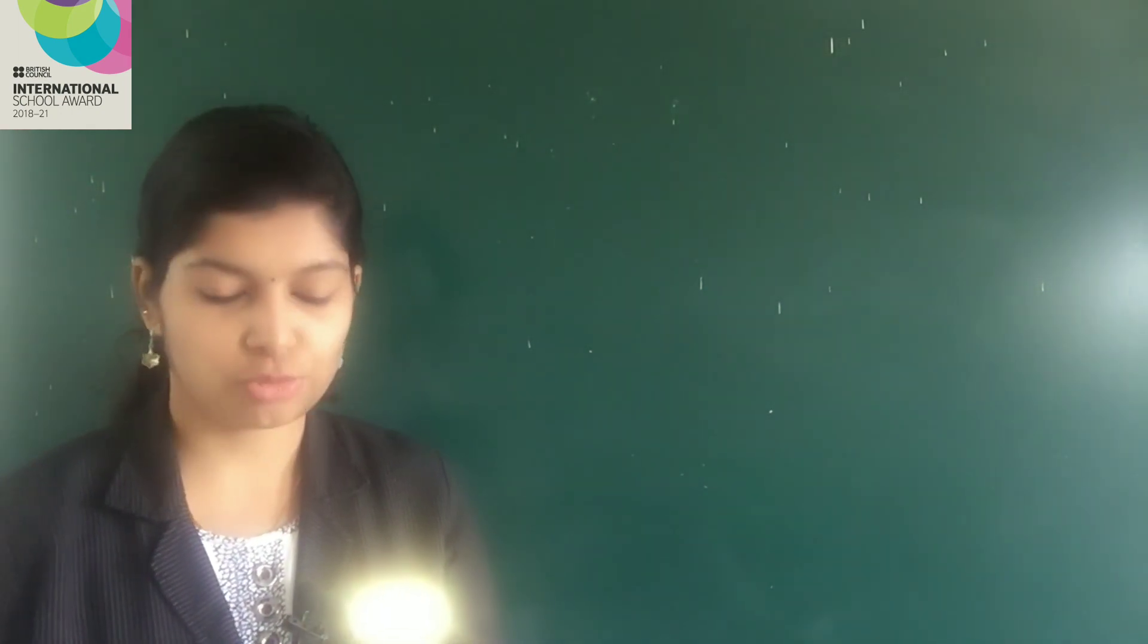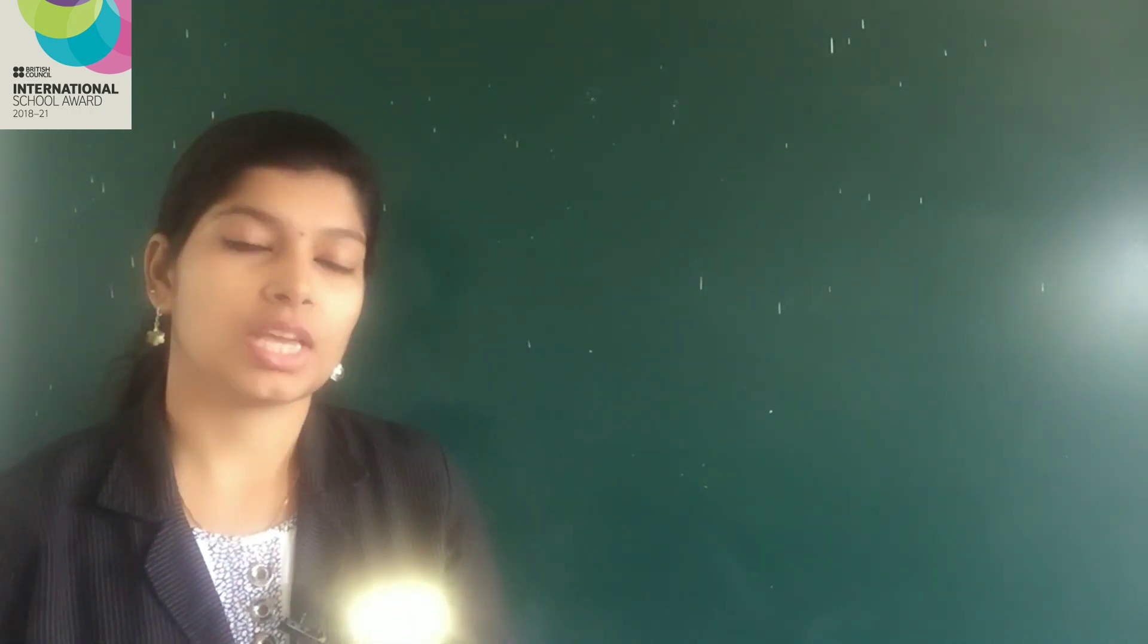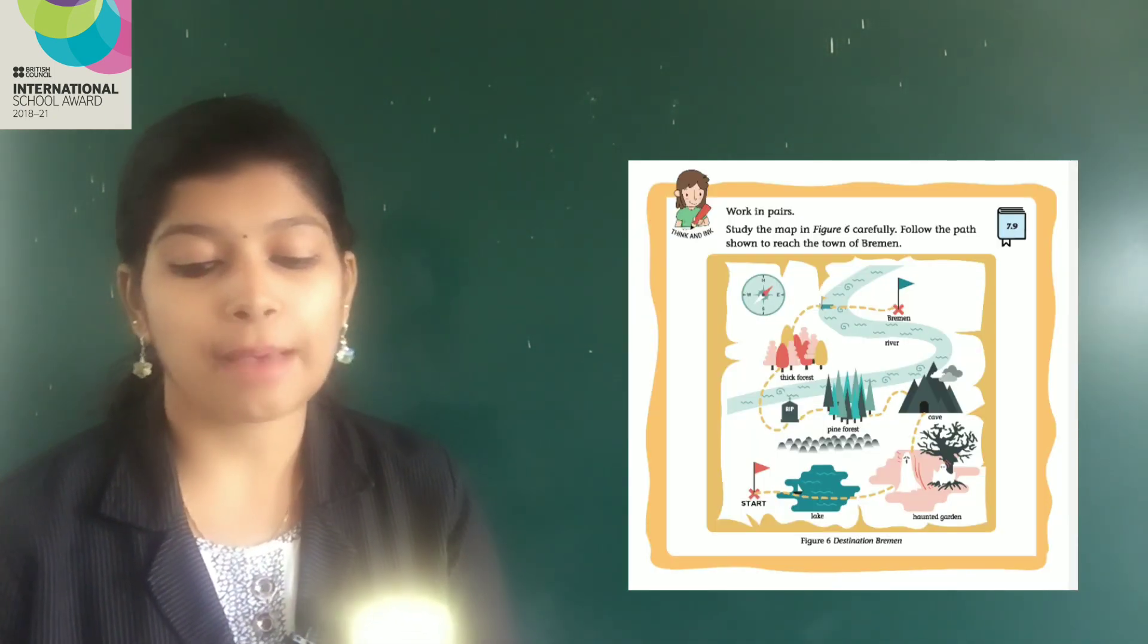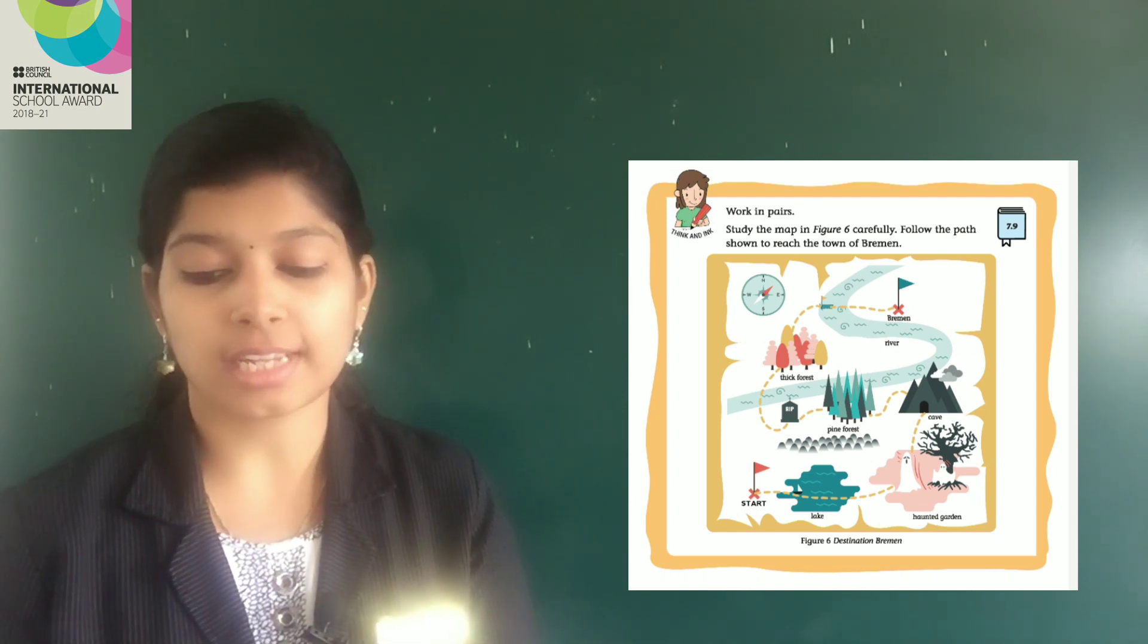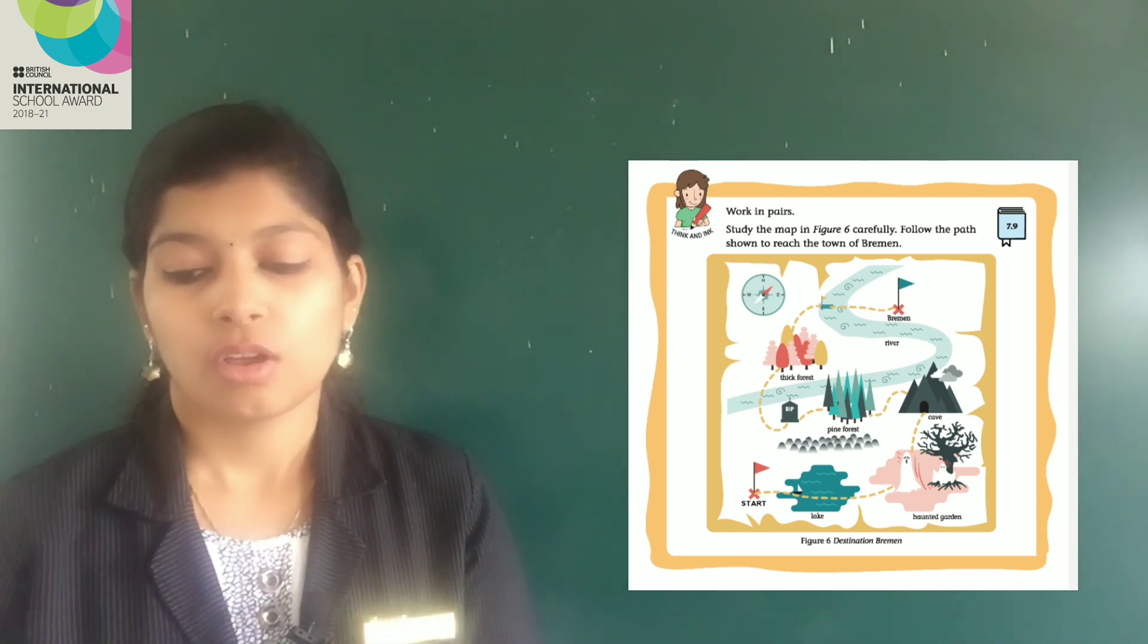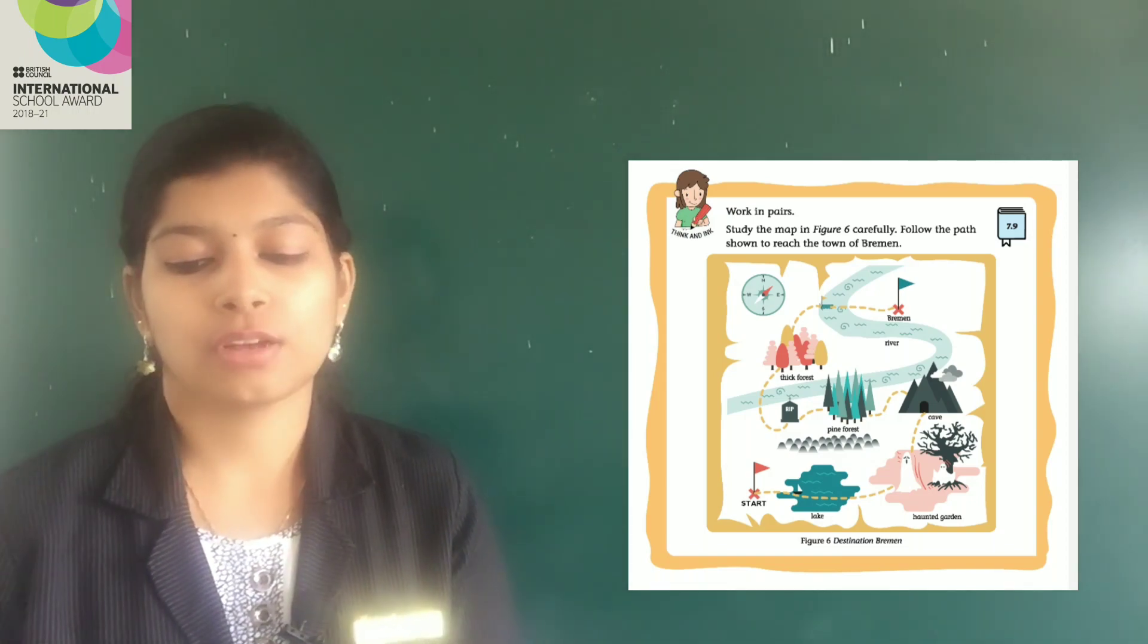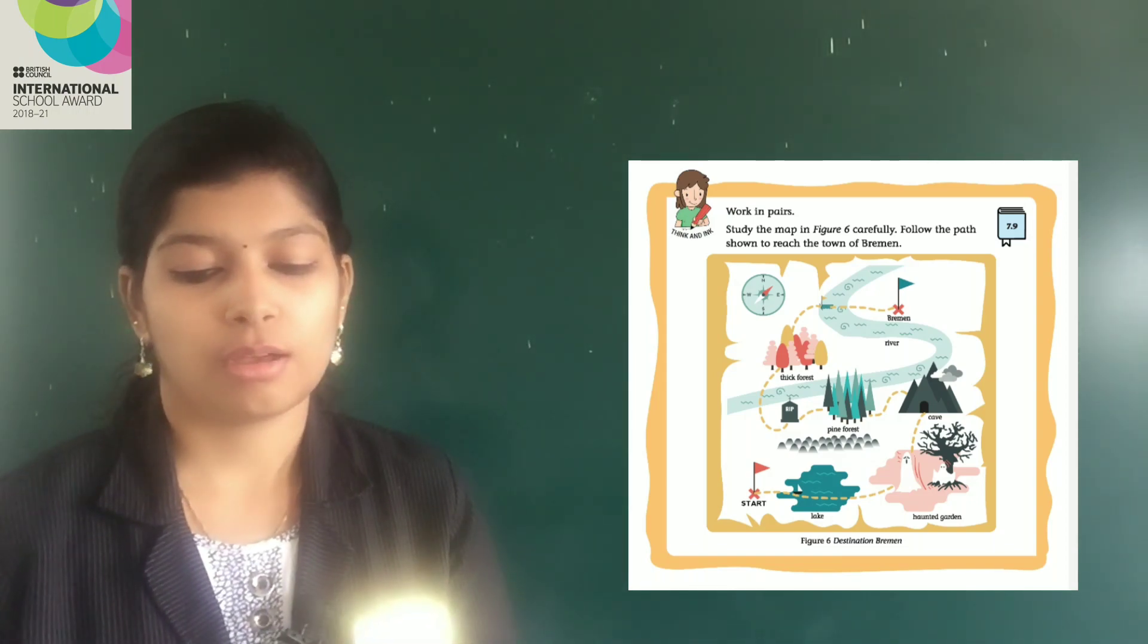Here, there is an activity in companion that you have to do on page number 22. Practice prepositions indicating direction, 7B to D in companion. Work in pairs. Study the map in figure 6 carefully. Follow the path shown to reach the town of Bremen. You can see a map here. This is a map of the town of Bremen.